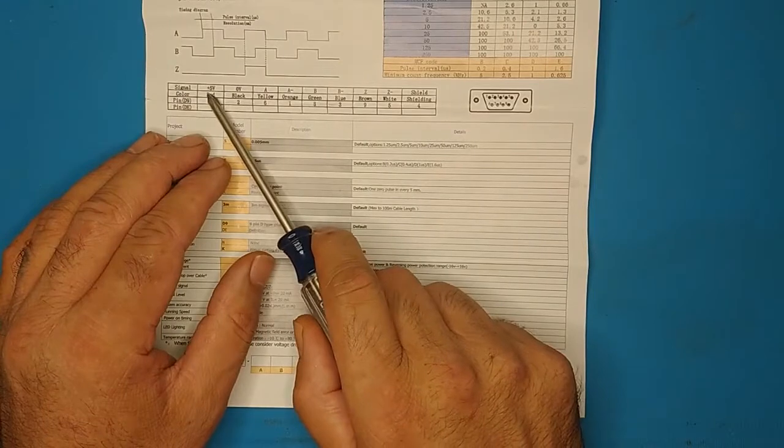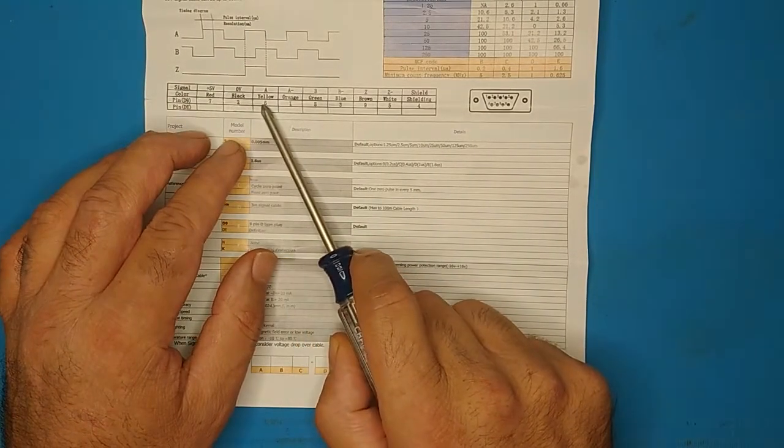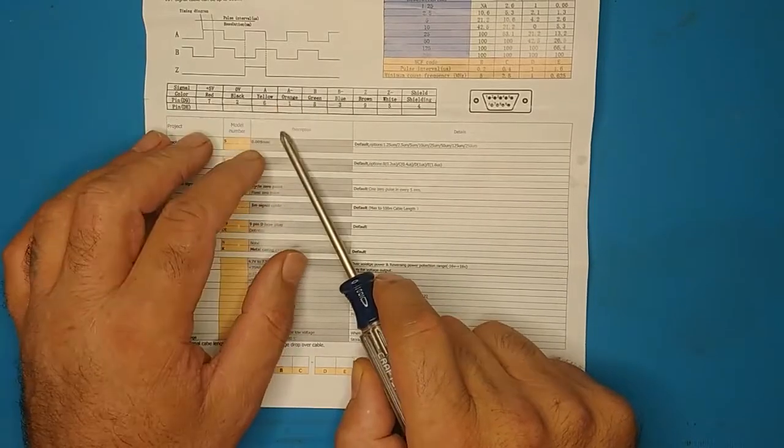which has the pinout of the DB9 connector here. So, what TouchDRO needs is 5V plus 5V, the ground, or 0V as they call it here, A and B.